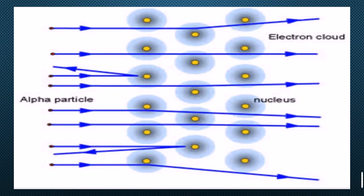Here is the experimental setup. Alpha particles were directed towards the gold foil, and behind the gold foil there was a graphite screen or zinc sulfide screen to show the results. The results indicated both positively and negatively charged interactions.